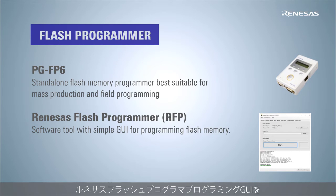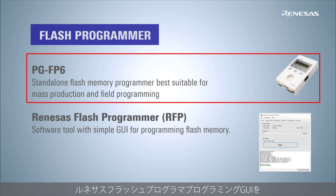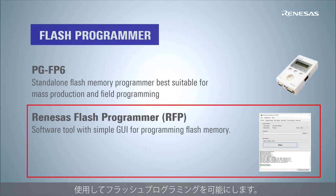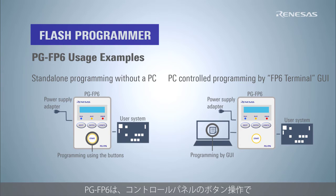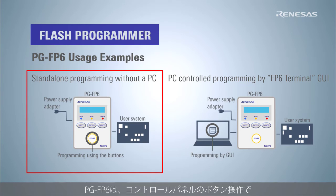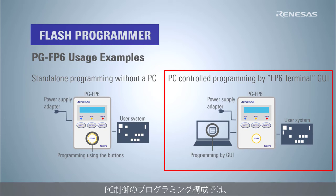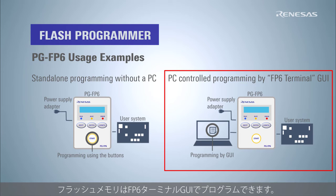Renesas enables Flash programming with both the PGFP6 standalone Flash programmer and the Renesas Flash Programmer GUI. The PGFP6 supports standalone programming which can be operated without a PC, allowing high-speed programming. Programming is done by pressing the button on the control panel. In the PC-controlled programming configuration, the Flash memory can be programmed by the FP6 terminal GUI.